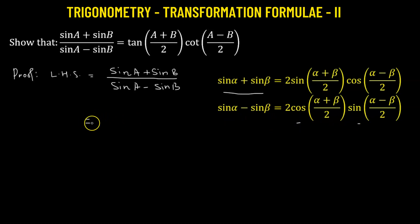So that will be equals to, now we have in the numerator two times sine of angle a plus b over two, multiplied to the cosine of the angle a minus b over two, whole divided by